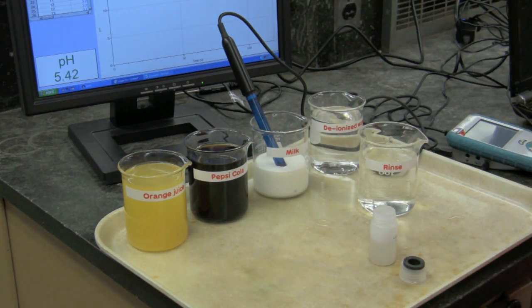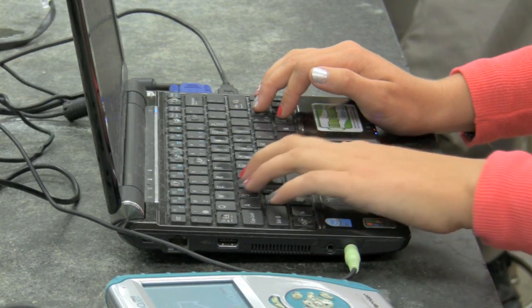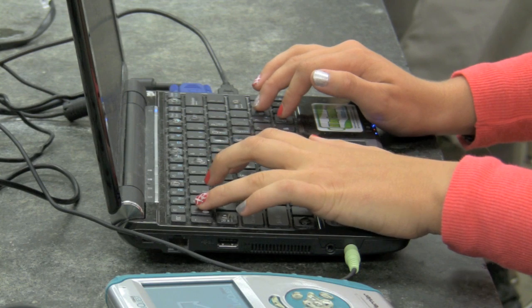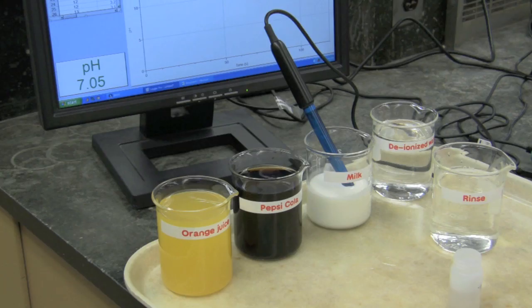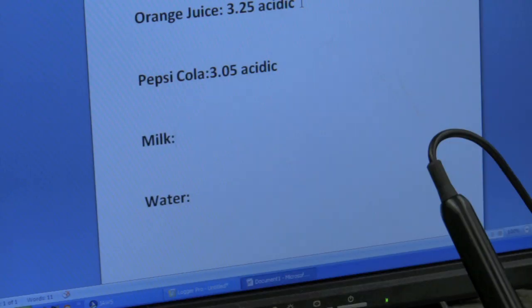She will record the data given by Logger Pro again in the Word document. pH equals 6.98, pH equals 7.05. 7, period, 0, 5, space, B, A, S, I, C.